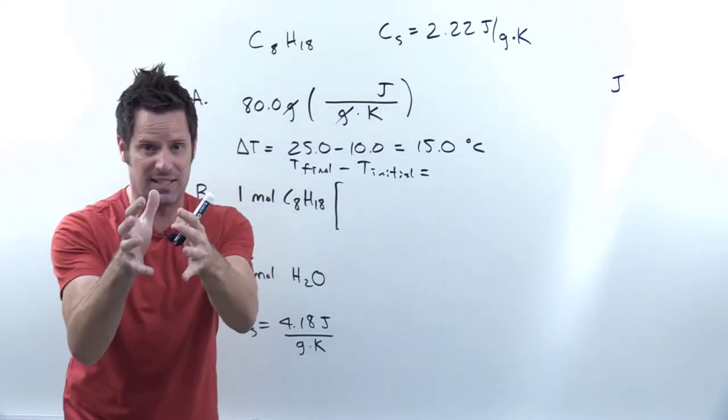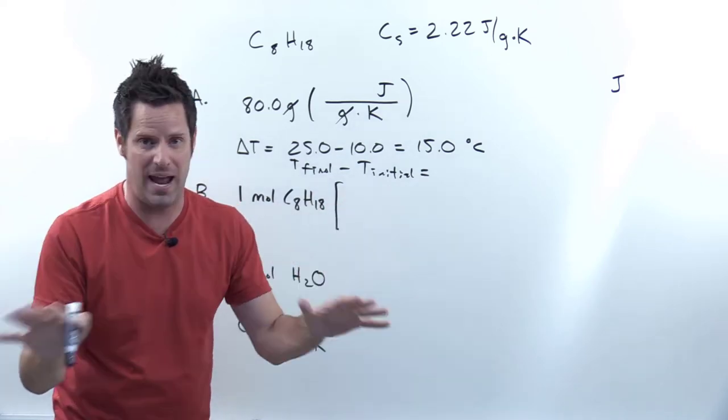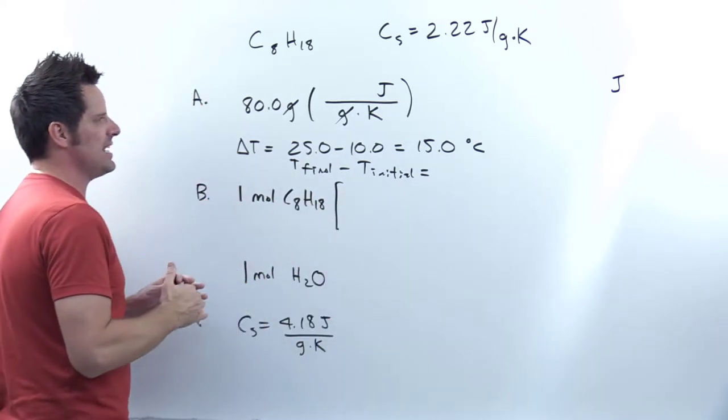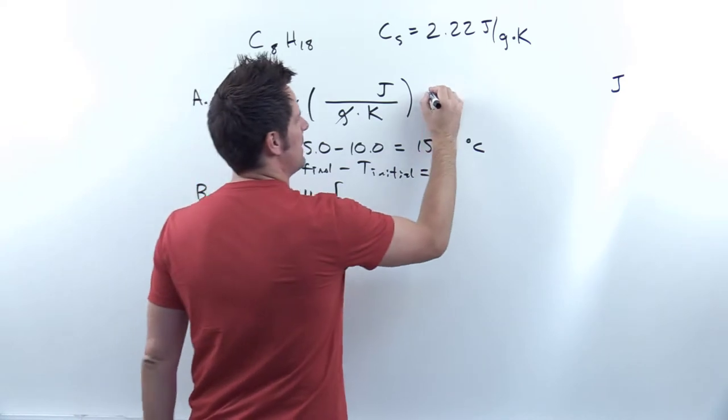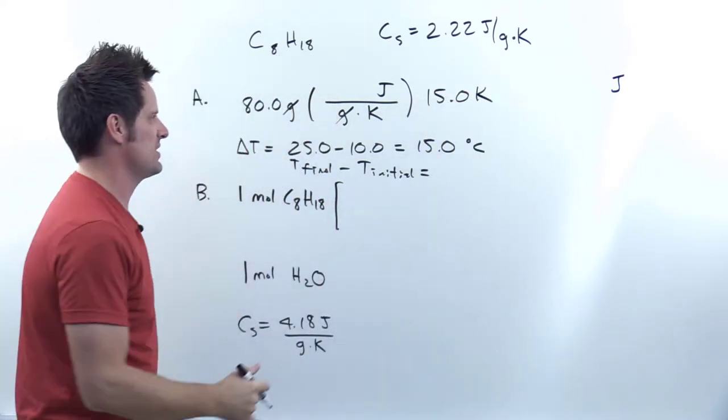if you're dealing with ΔT's, you can just interchange degrees Celsius with kelvins without doing any additional math, okay? So the ΔT here in kelvins is 15.0 kelvins, as well as 15.0°C.